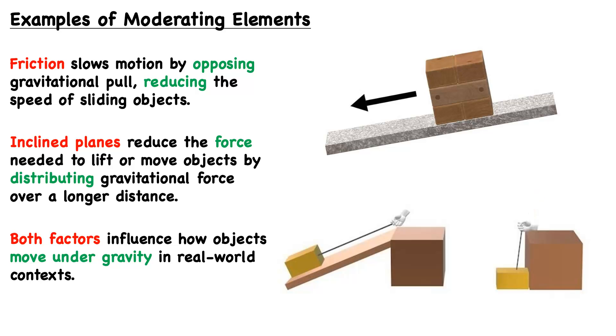The benefit of using an inclined plane is it increases the distance to reduce the force. This situation with the inclined plane makes it easier to lift the object. It's fundamentally because it's distributing gravitational force over that longer distance. So both factors influence how objects move under gravity in real-world contexts.